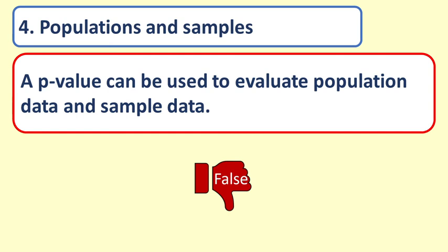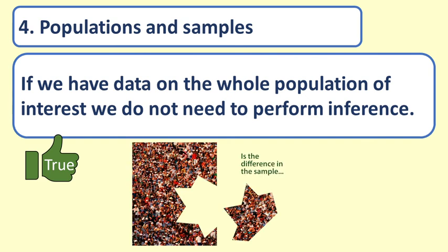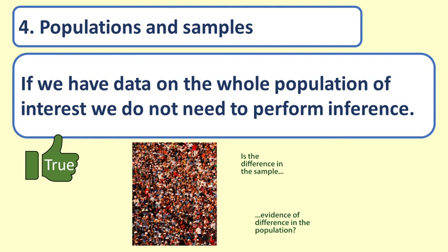False. If we have data on the whole population of interest, we do not need to perform inference. A p-value is needed when inferring if a result we find in a sample reflects an effect in the population from which the sample is drawn.